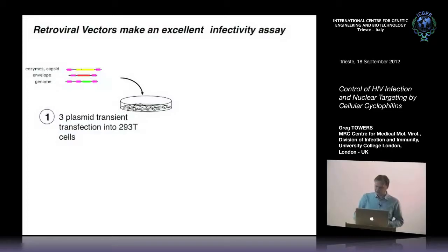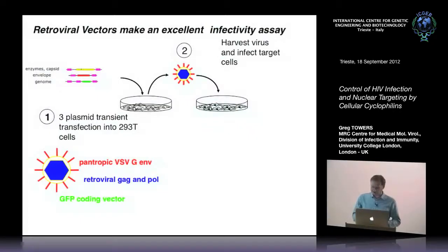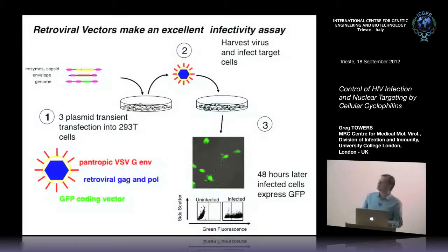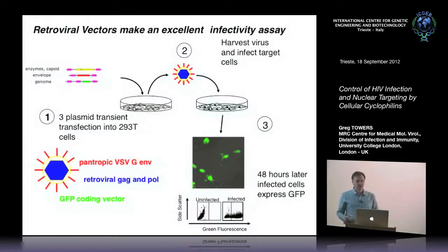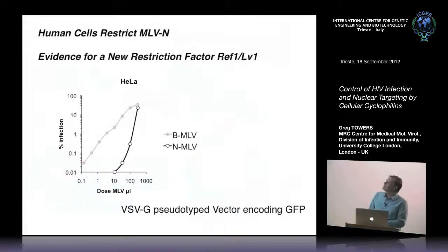You transfect these three plasmids into 293T cells and virus comes out. We typically use a VSVG envelope protein - not a retroviral protein, but it allows us to infect any cell line we've tried. You end up with retroviral particles that encode GFP and do not encode any viral genes. When you put that supernatant onto fresh cells, the infected cells become green and you can read those out using flow cytometry - a very quick way to measure viral infectivity. We make mutations in GAG or knock down proteins by RNAi and measure what happens to infection.